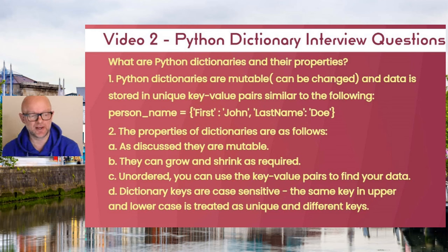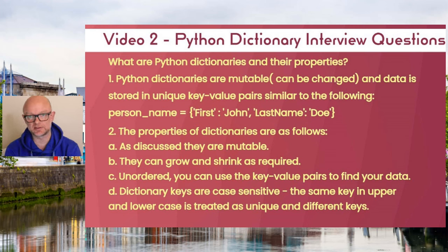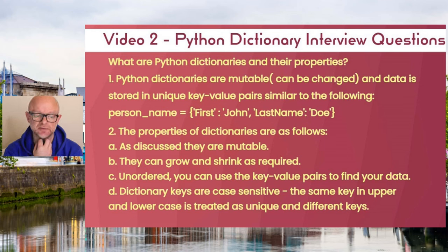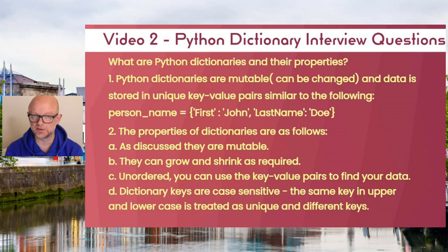Obviously the bigger the size, think about how to manage the key-value pairs you keep in there, but there's no restriction on size. Dictionaries are also unordered — they're not in any particular order, so you may have a scenario where you need to sort the key-value pairs, and we'll be looking at that later. The last property is that they're case-sensitive, so you can have two key-value pairs with exactly the same name but different cases, and Python will treat those as two separate key-value pairs. To avoid duplication, always keep your keys consistently either uppercase or lowercase.